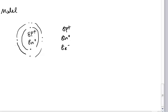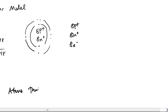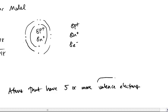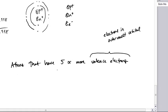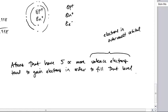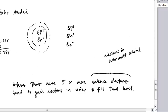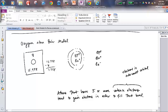How would this thing ionize? I'll offer another rule: atoms that have five or more valence electrons — that is, electrons in the outermost orbital — tend to gain electrons in order to fill that level. In oxygen's case, two more electrons are needed to fill this level.